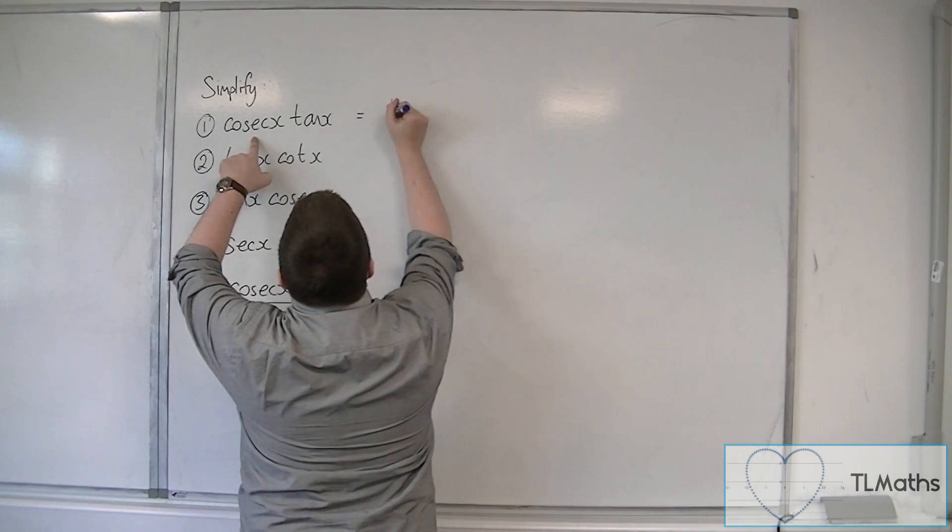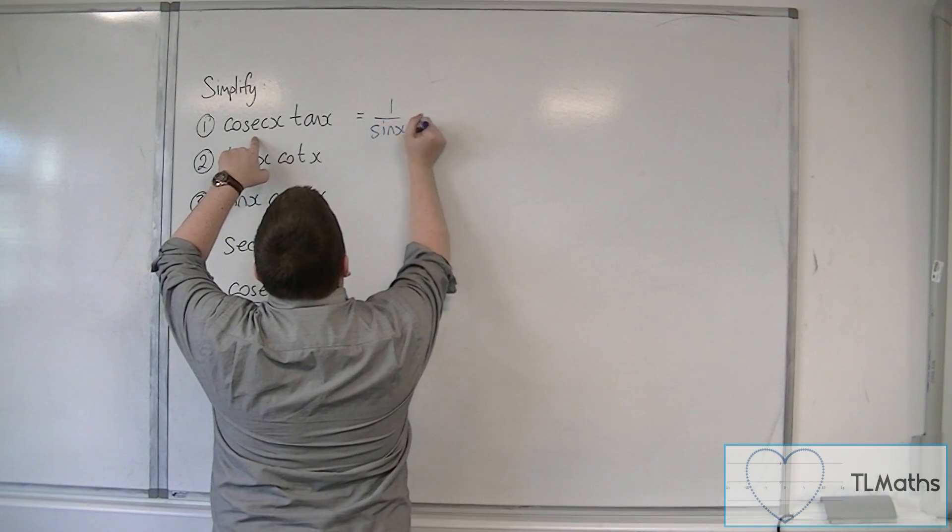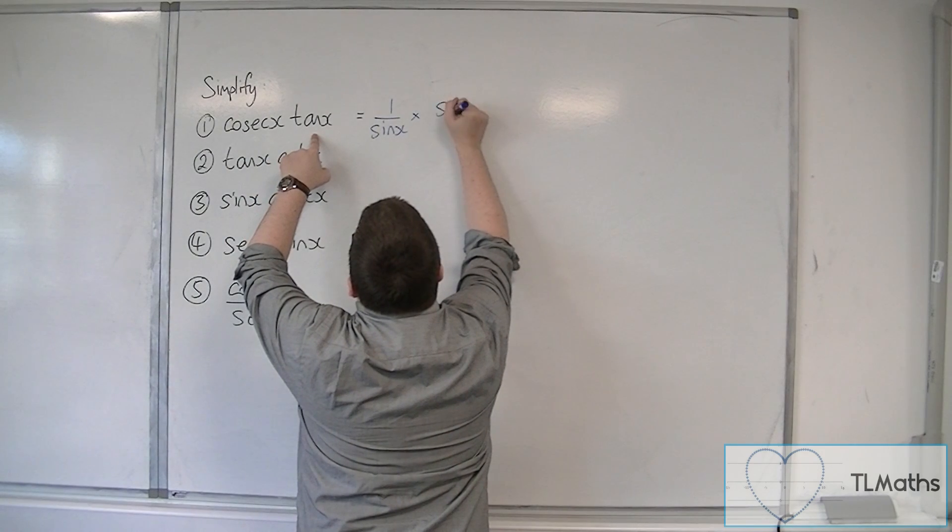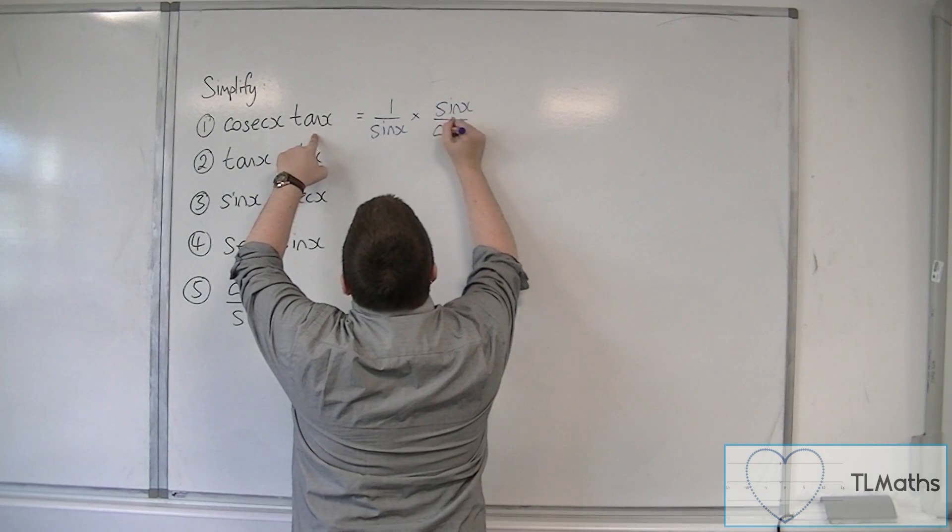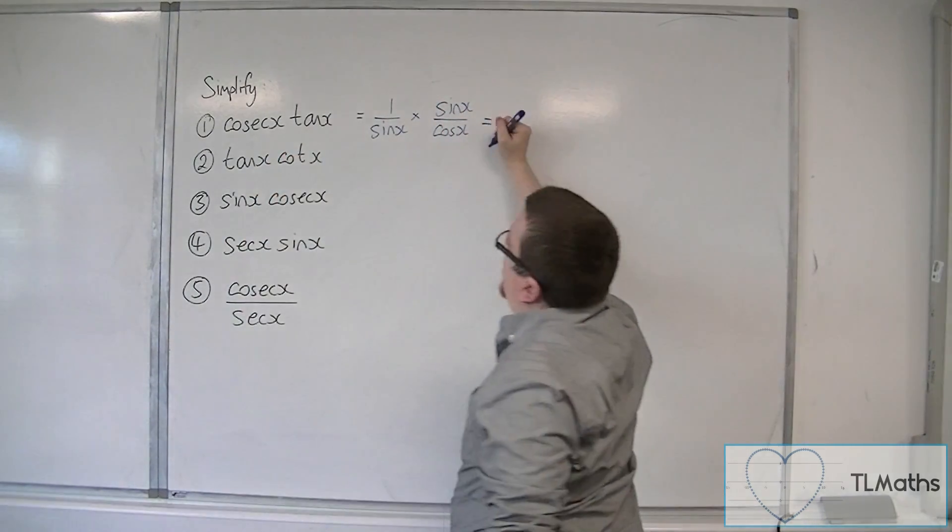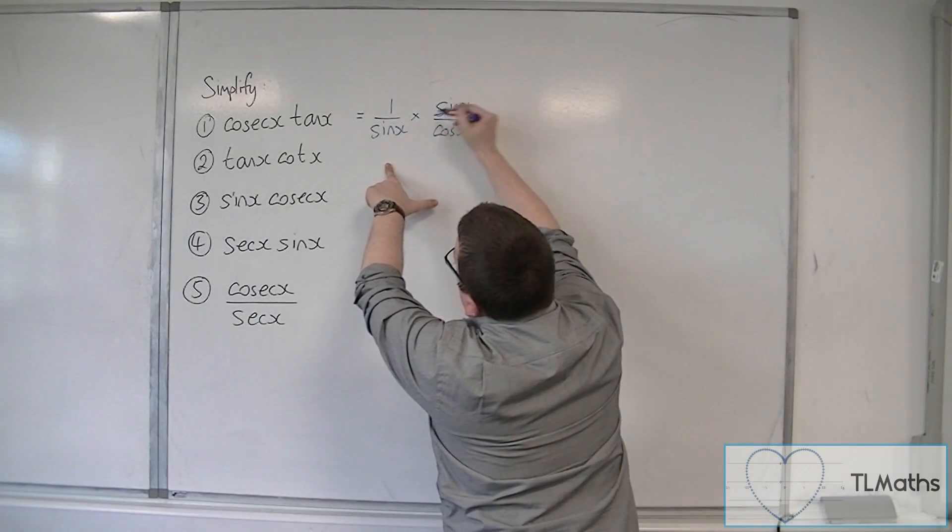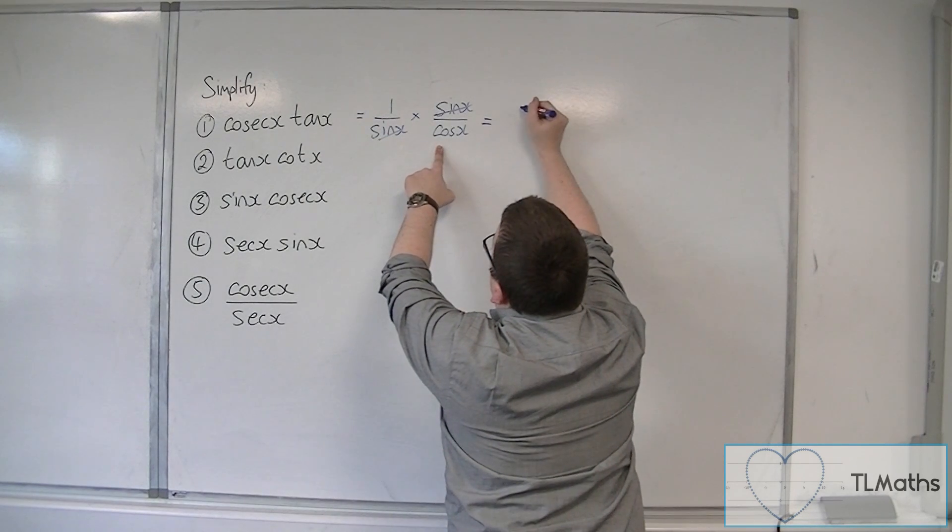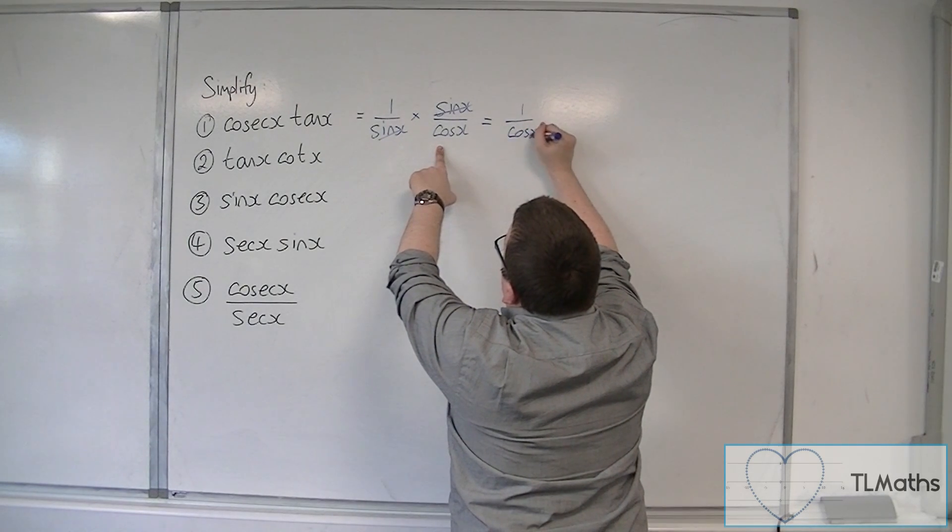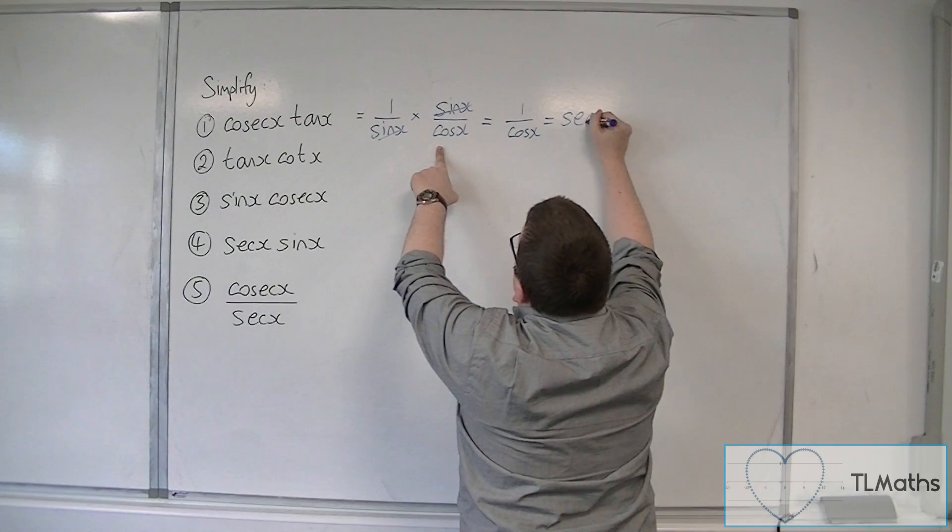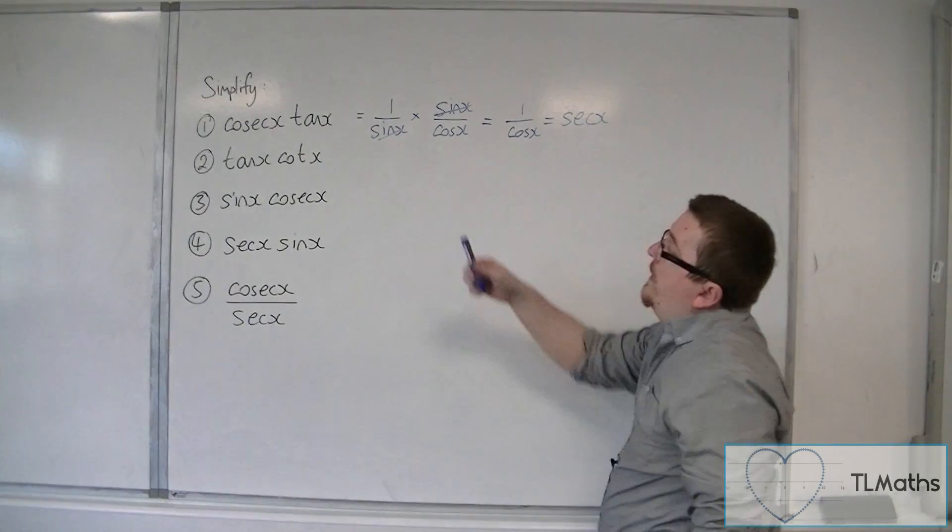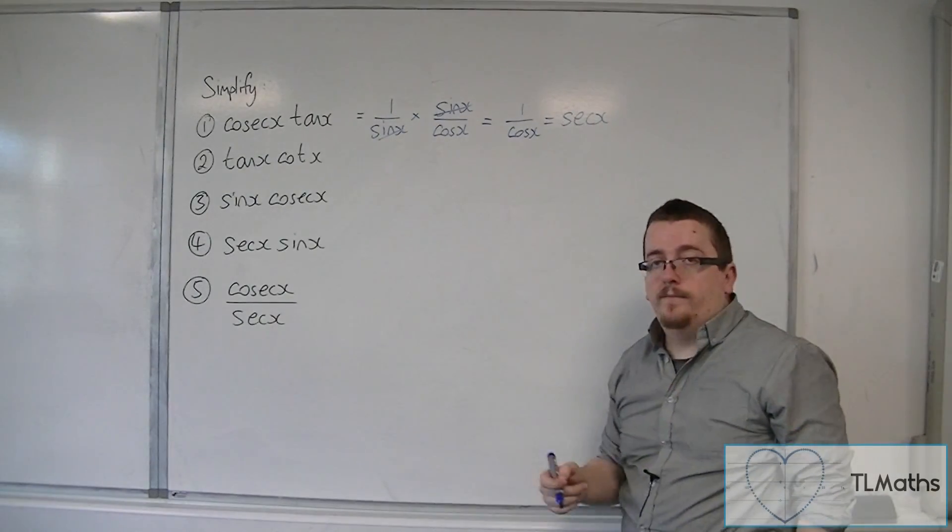So cosec is 1 over sine, and we're multiplying that with sine over cos. And what you should be able to see here is that the sines will cancel each other out. And we're just going to be left with 1 over cos. But 1 over cos, we already know that's sec. So cosec tan is sec.